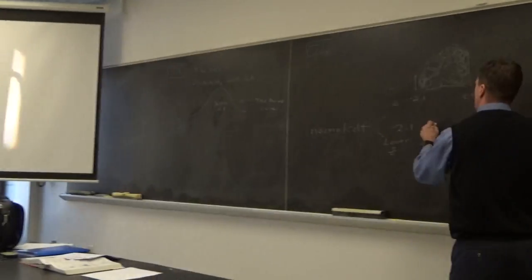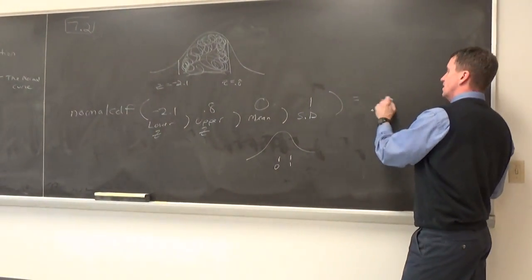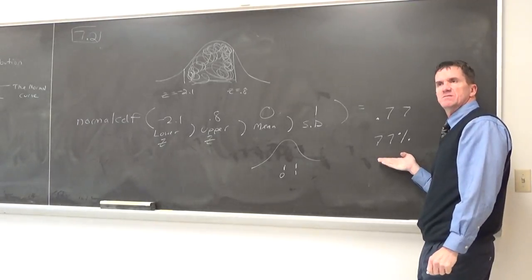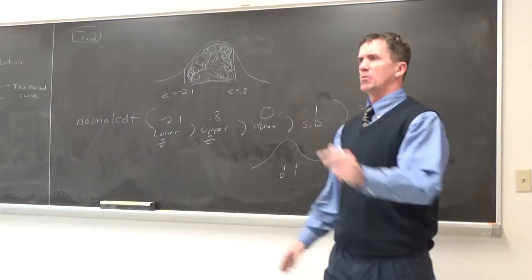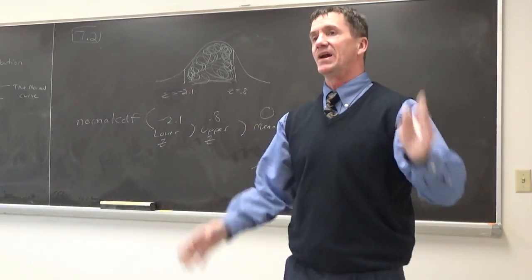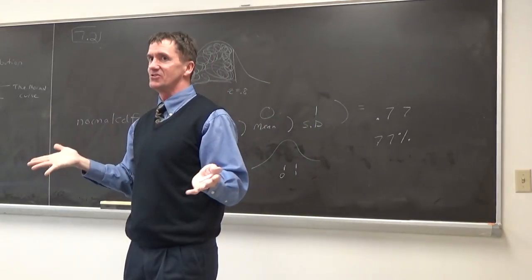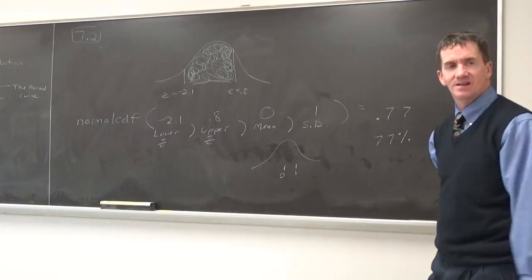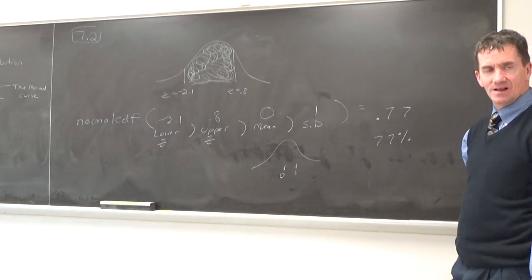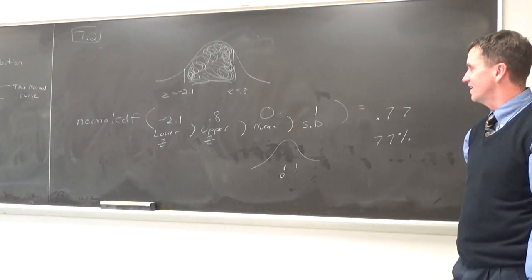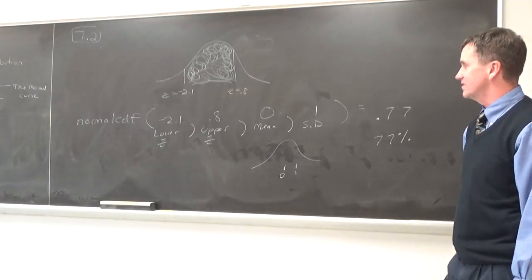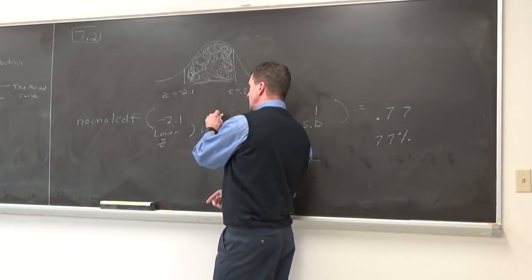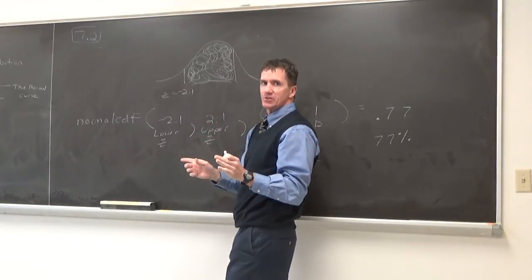You can think of that as a probability or percentage. Seventy-seven percent of the babies that were born were between this weight and this weight. That's what we're going to be talking about. But it has to be a bell-shaped distribution. Not all distributions are bell-shaped, but weight of babies, height of men, height of women, IQ scores, things like that. A student asks: if I did negative 2.1 and upper is 2.1, would the area be one? Let's see what we get. This should be really close to 100. But it won't be 100, will it?